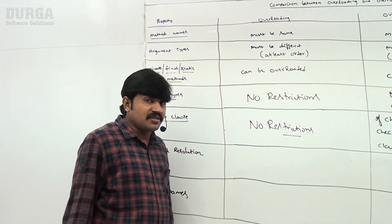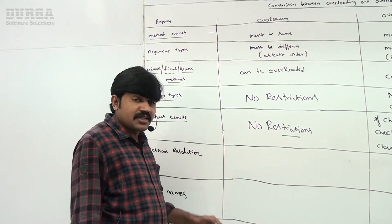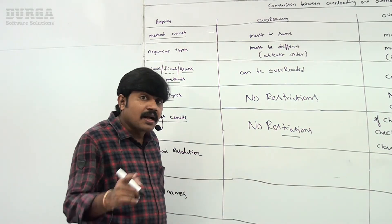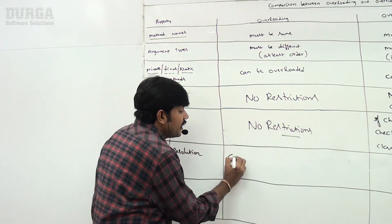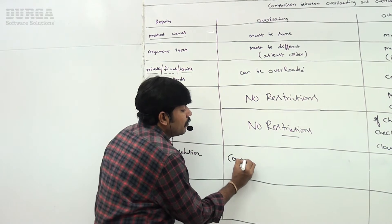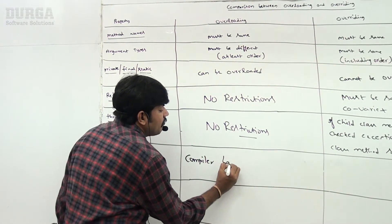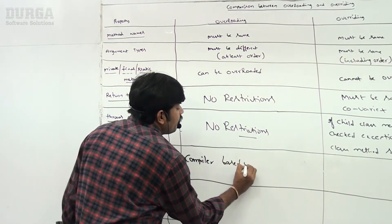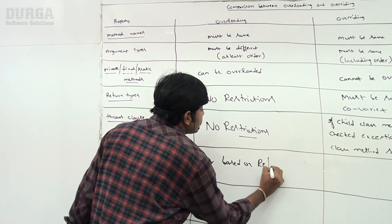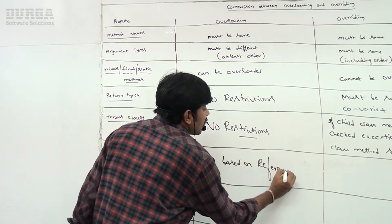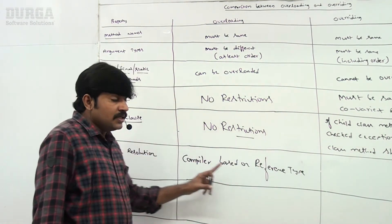Regarding method resolution — in overloading, method resolution is always taken care of by the compiler, based on the reference type.